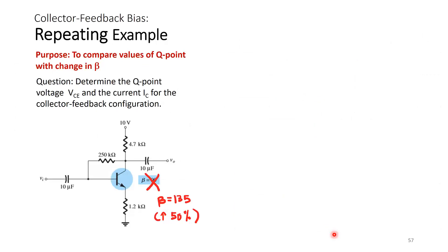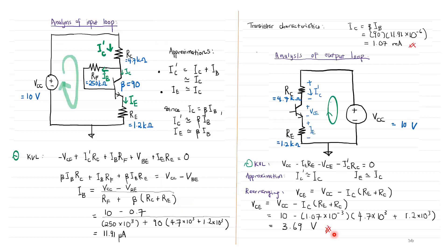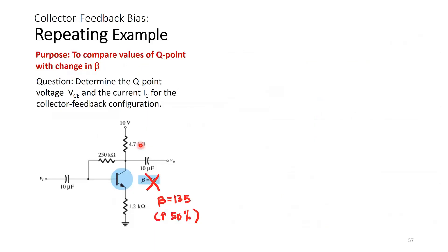Let's repeat this example to see what happens if beta changes. We know that beta is sensitive to temperature, and we want to understand how much a change in beta affects the Q-point we have designed for, since we want linear amplification and a stable operating point.